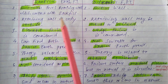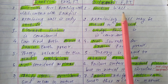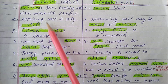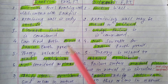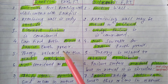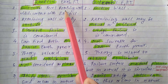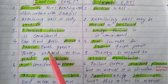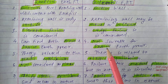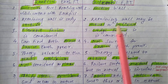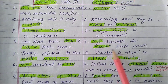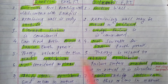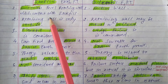Third difference: for Rankine's earth pressure theory, element failure is considered, but in Coulomb's earth pressure theory, wedge failure is considered. Fourth difference: in Rankine's earth pressure theory, both active and passive earth pressure can be found. But Coulomb's theory is only suitable for the active case — it is not suitable for passive earth pressure.